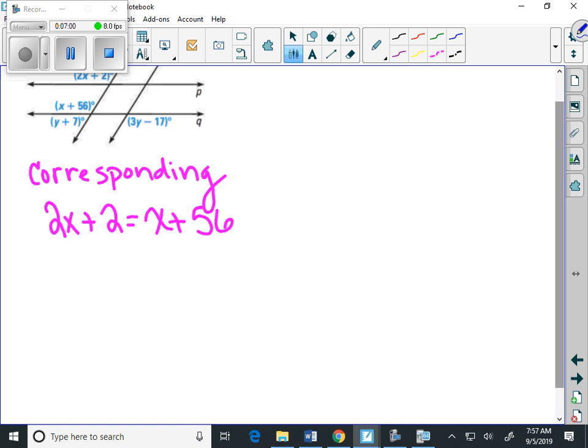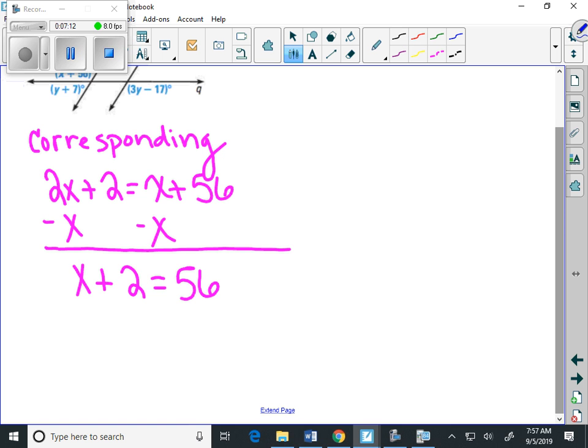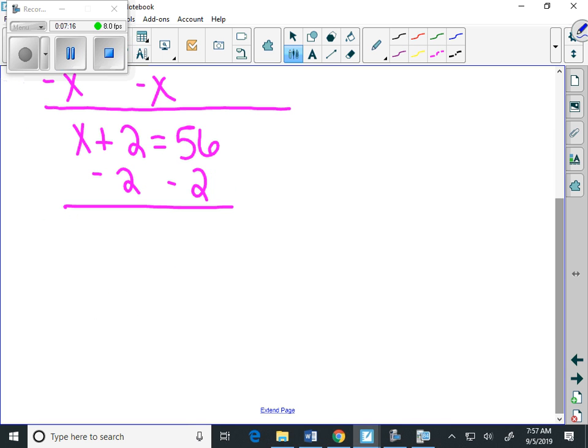And now we're going to solve, again, solve the way your algebra 1 teacher taught you. Let's subtract x from both sides, and we get x plus 2 equals 56. And then we can subtract 2 from both sides. And we end up with x equals 54.